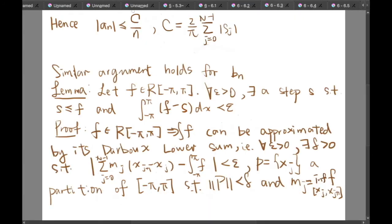Dividing both sides by π we get that the absolute value of aₙ should be smaller than or equal to c/n where c is given by such expression. So the similar argument holds for bₙ and therefore we are done with the first lemma.